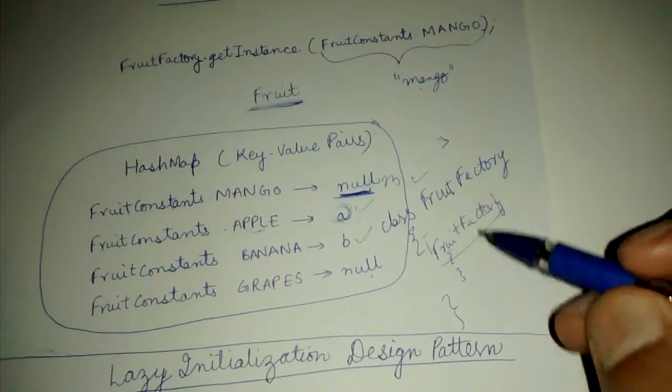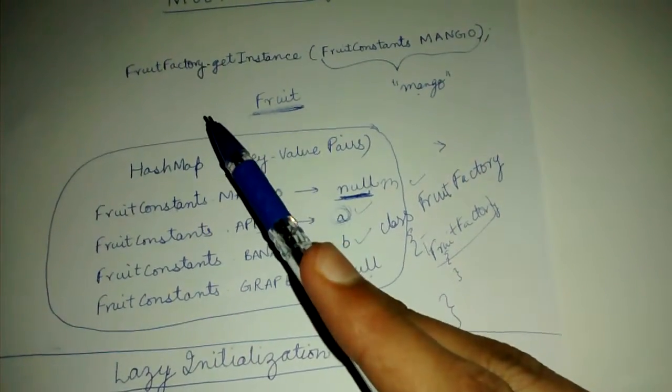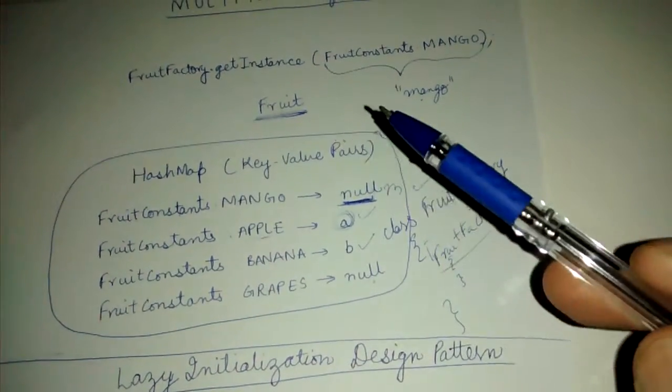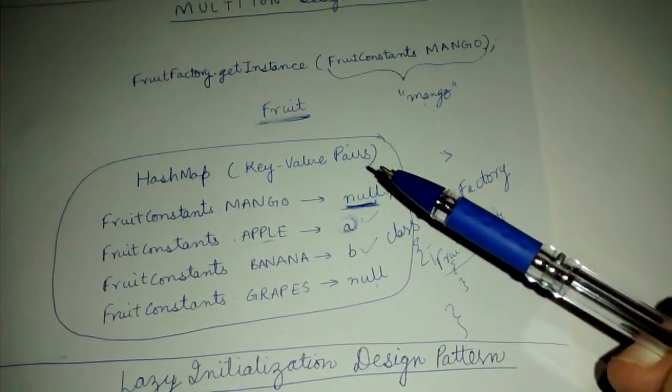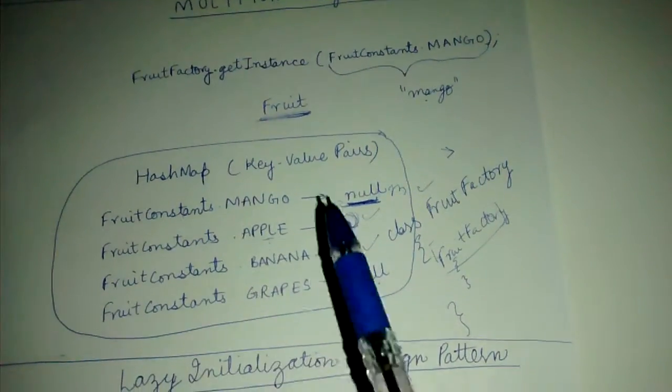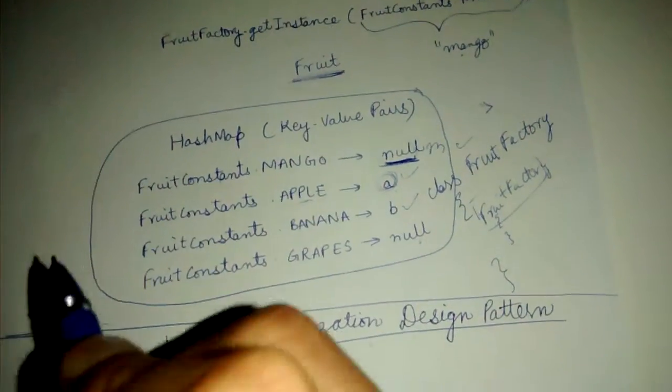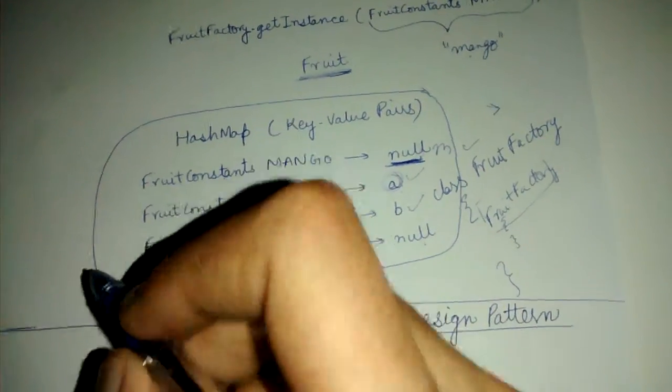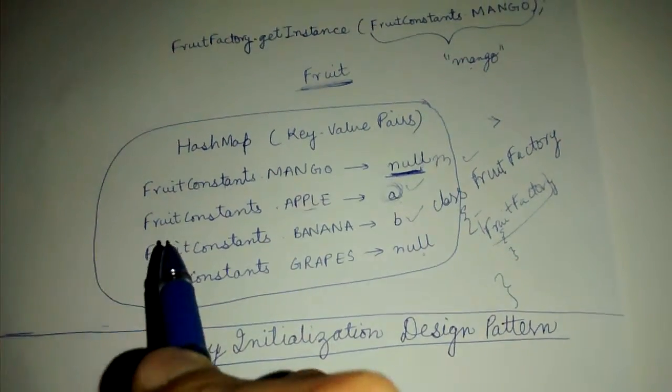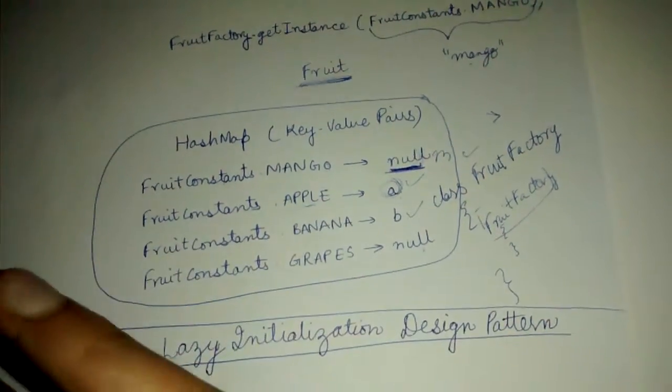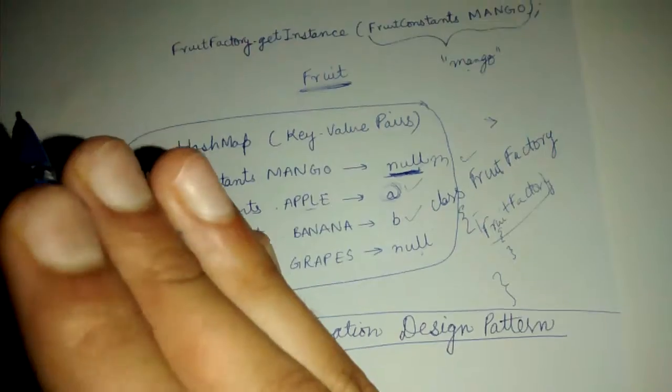So we defer this fruit creation till the time when this fruit is actually required by our program. This is a performance benefit that we don't waste our time creating those fruits which are never required in our program's lifetime.